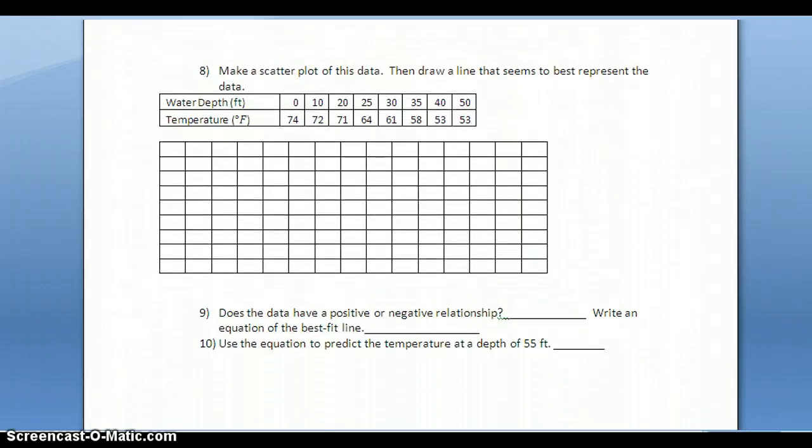I have this problem where I'm going to make a scatterplot of this data, draw a line of best fit, and then use that to find some information for a new set of data.